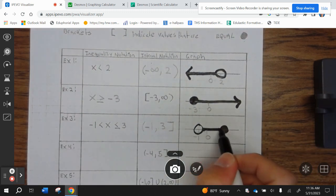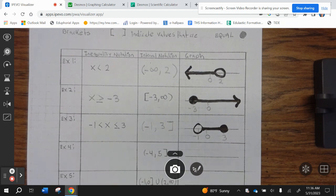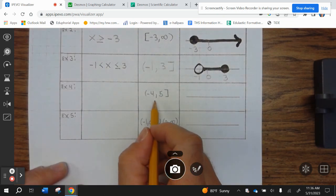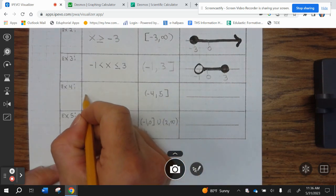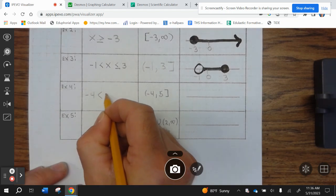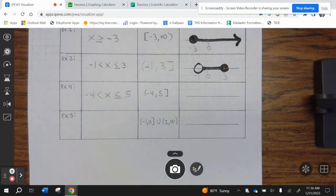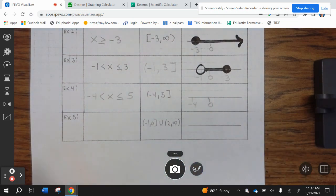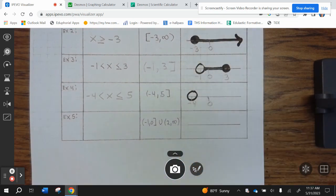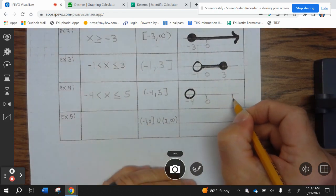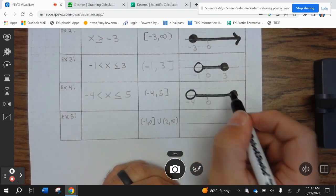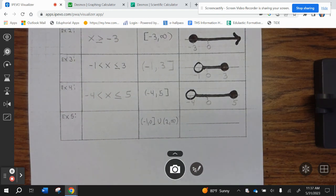And then we shade in between. Okay? Let's take a look at the next example. So, this would be negative 4 less than X less than or equal to 5. So, again, you always want to put 0, so you have reference. So, this would be negative 4, open circle. And then 5 right here, close circle. And then we shade in between.